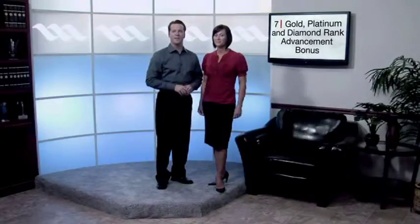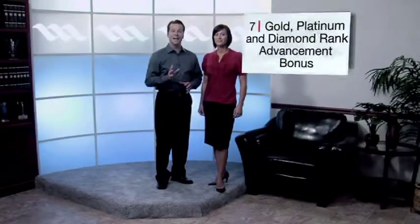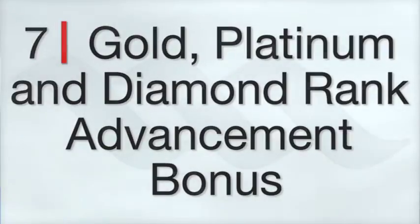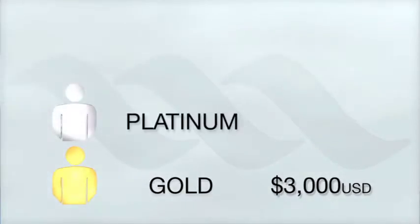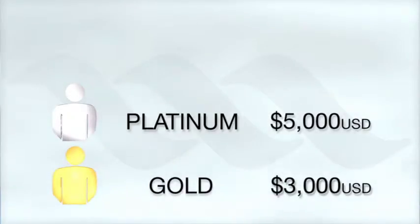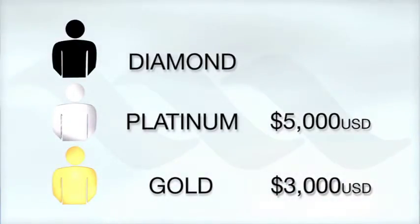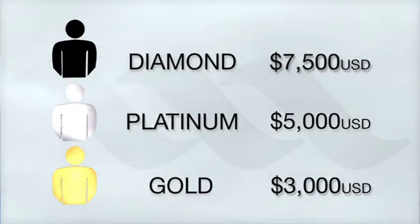The seventh way to earn income is through the gold, platinum and diamond rank advancement bonus. Once you're paid for two consecutive months as a gold associate, you'll receive a 3,000 US dollar bonus. When you maintain platinum status for two consecutive months, you'll receive a 5,000 US dollar bonus. And when you've been a diamond for two consecutive months, you qualify for a 7,500 US dollar bonus. As you can see, your opportunity to earn lucrative bonuses increases as you build your business. And the more you help your team members advance, the more income you generate for yourself and everyone on your MAX team.